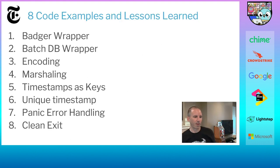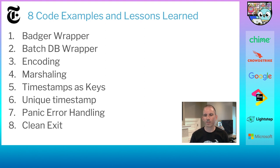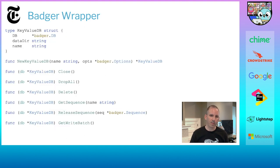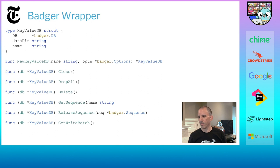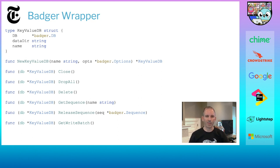I've got eight examples to walk through of what I did to use Badger. The first thing we did was build a wrapper around Badger to obscure some of the finer details of the API. The initial wrapper just wraps the Badger database — we tell it where the data lives and the name, and provide access to common things like closing. For unit tests, we provide access to dropping all and deleting the database. We also use sequences in Badger for performance, which I'll show later.